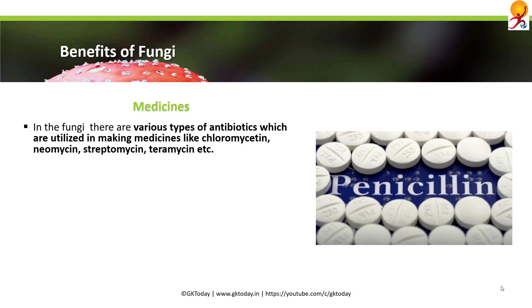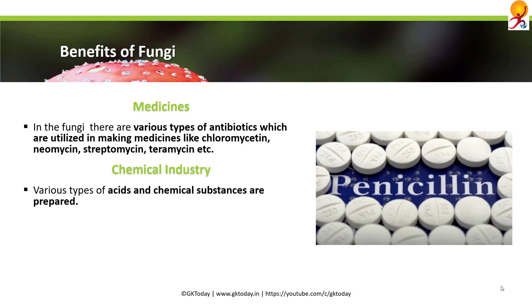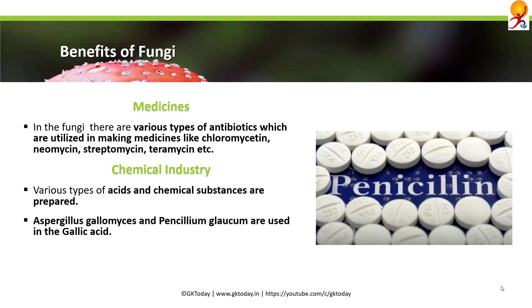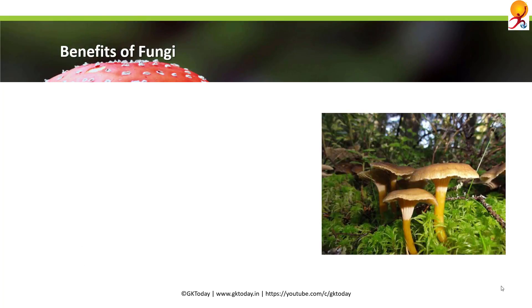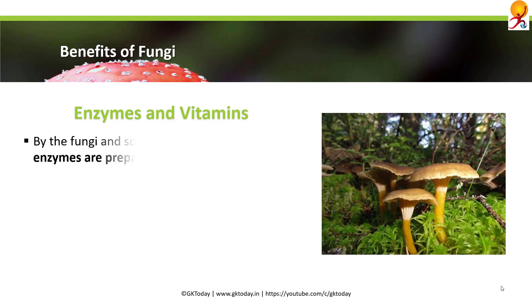In medicines, fungi are used to make various types of antibiotics utilized in making medicines like chloromycetin, neomycin, streptomycin, and terramycin. In the chemical industry, fungi are used to produce various acids — Aspergillus gallomyces and Penicillium glaucum are used in gallic acid production. Similarly, gluconic acid and fumaric acid are prepared by Aspergillus niger, Rhizopus, and Agaricus.